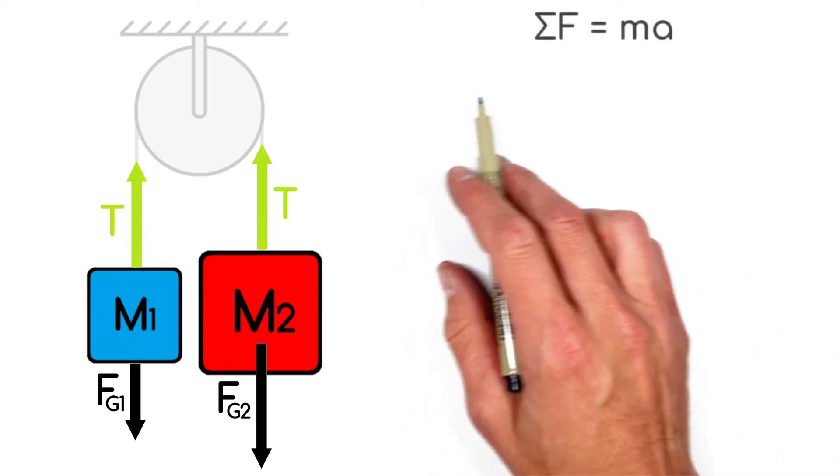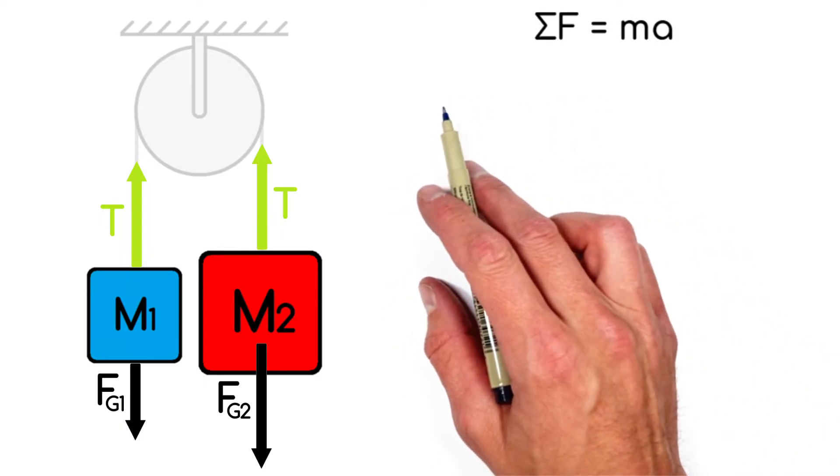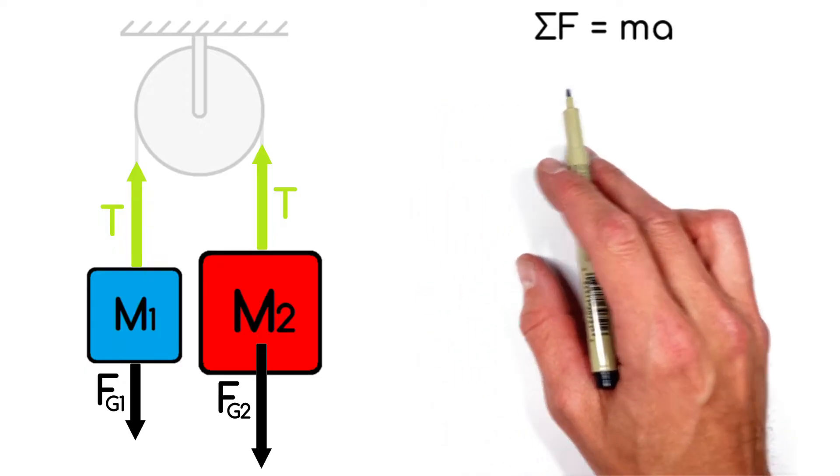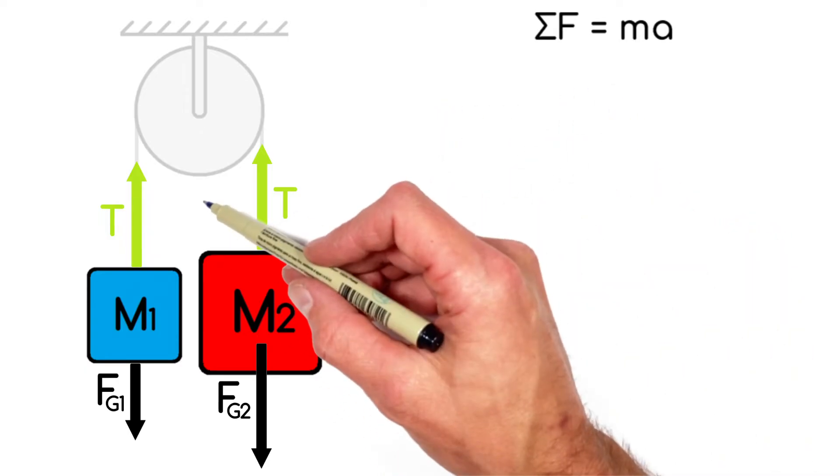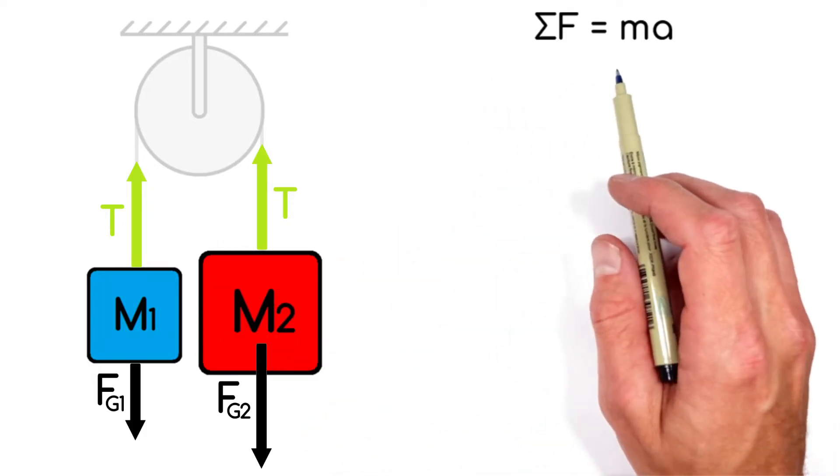You see, looking at Newton's second law, which says that the sum of all forces acting on an object is equal to that object's mass times acceleration, we can plug in the forces acting on an object in order to solve for that object's acceleration.